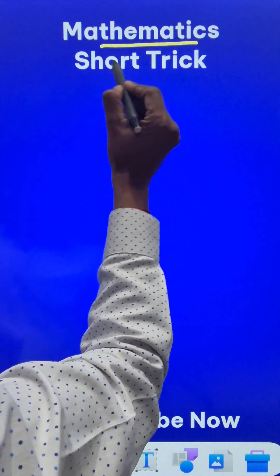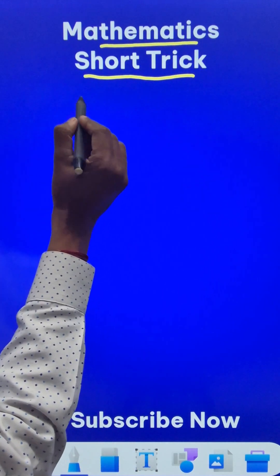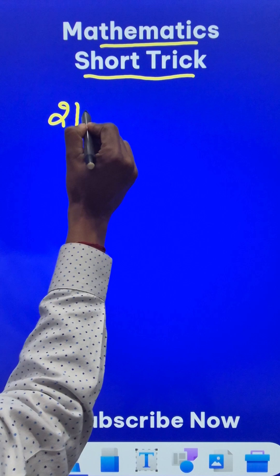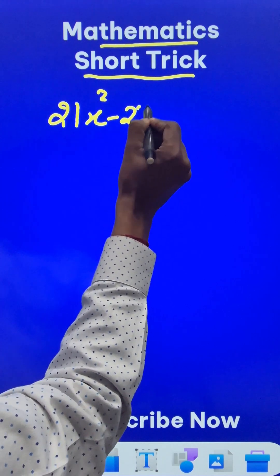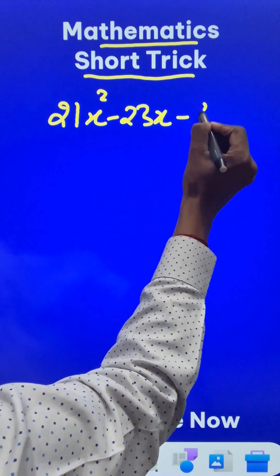Look at this mathematics short-trick. Suppose you have a big, big polynomial like 21x squared minus 23x minus 88.